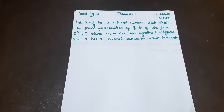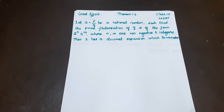Welcome to GoodEfford Channel. Good morning students. Now let's see Theorem 1.6. Let x = p/q be a rational number such that the prime factorization of q is of the form 2 raised to the power n, 5 raised to the power m, where n and m are non-negative integers. Then x has a decimal expansion which terminates.